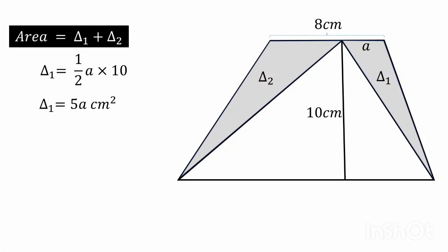Now look at the other triangle on the right side. The area of this triangle is del 2. So the base of this triangle will be 8 minus a.